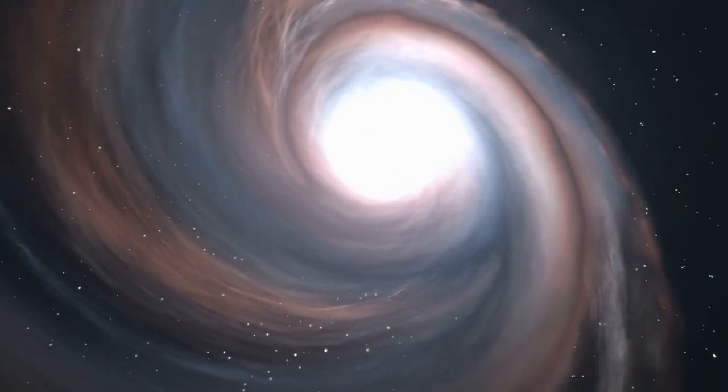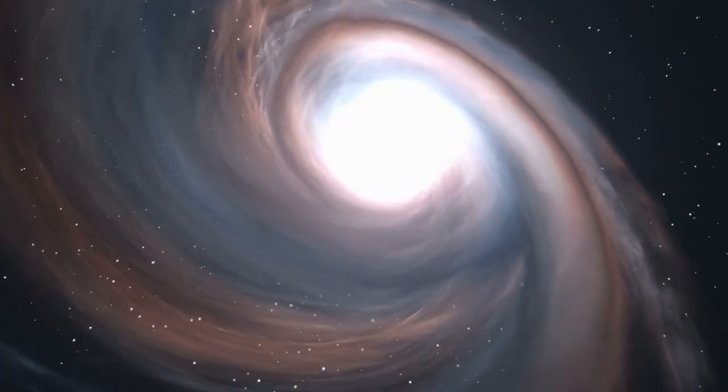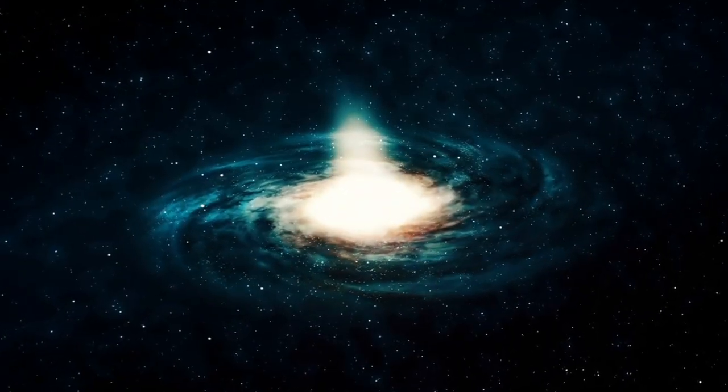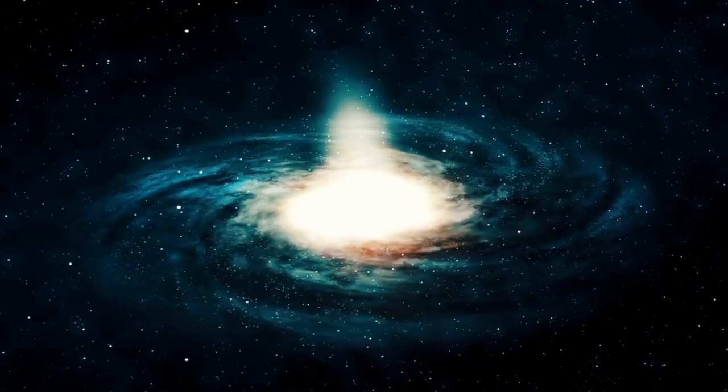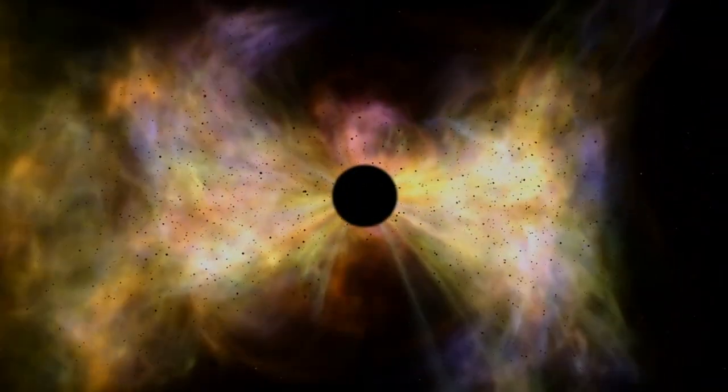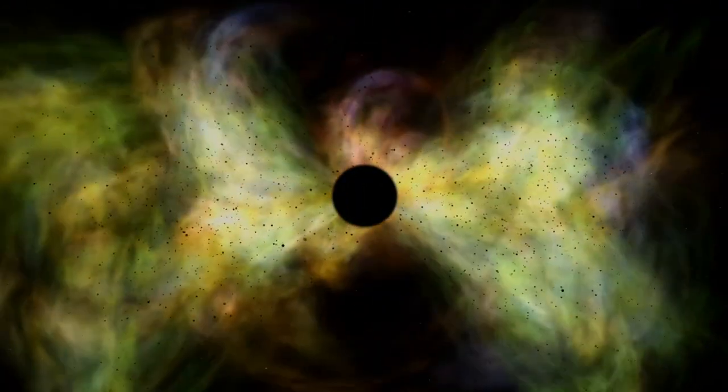By zooming in on the event horizons of black holes in giant galaxies like M87 and more typical galaxies like our own Milky Way, we can learn more about how the black hole and its host galaxy work together, even though it seems impossible.